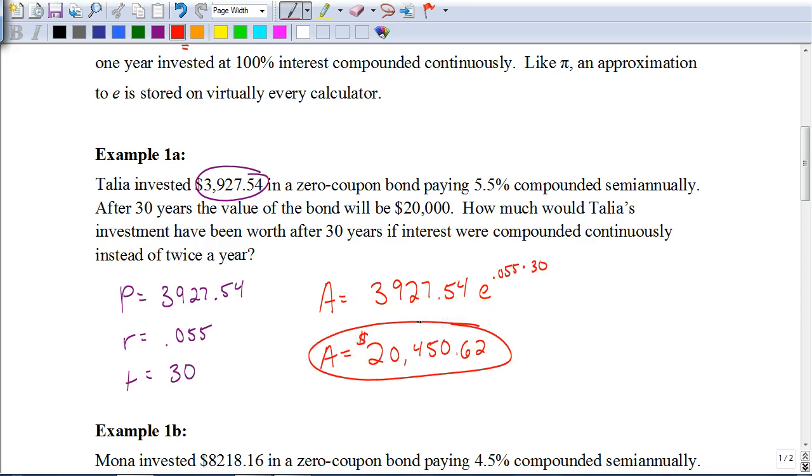Now, a note about typing this in on your calculator. Sometimes scientific calculators, people have problems with those. So you want to make sure that when you do that, that you put this in parentheses just to make sure that the calculator will figure this out properly. So it would be E to the 0.055 times 30. And then take that value, whatever that answer is, times $3,927.54.